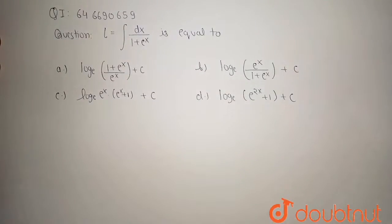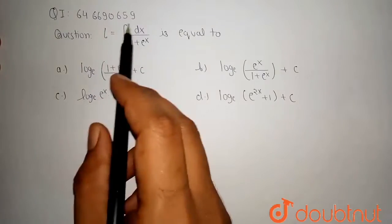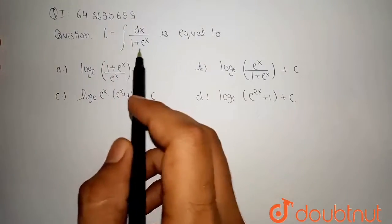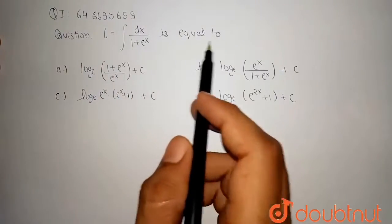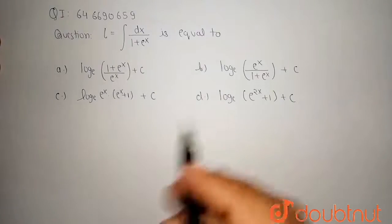Hello friends, welcome to Doubtnet. Our question is: if I is equal to integration of dx upon 1 plus e to the power x is equal to, we have given four options.